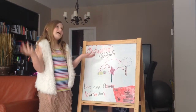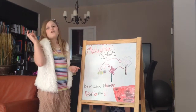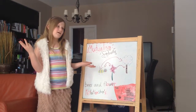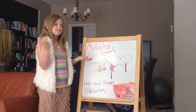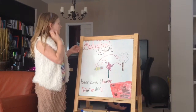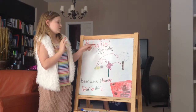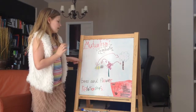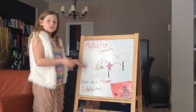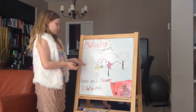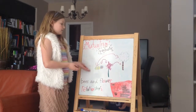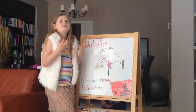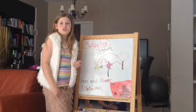Now, as I was saying, there are three different types of symbiotic relationships. One of them is mutualism. Now, mutualism is where all different species depend on each other.